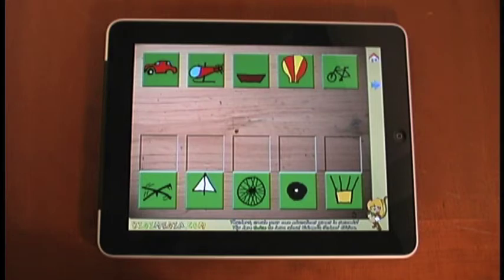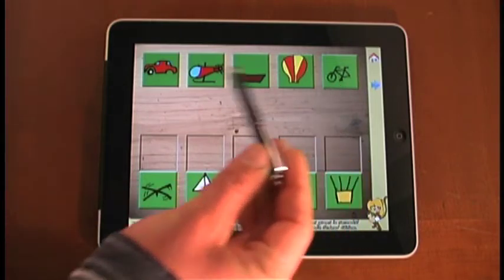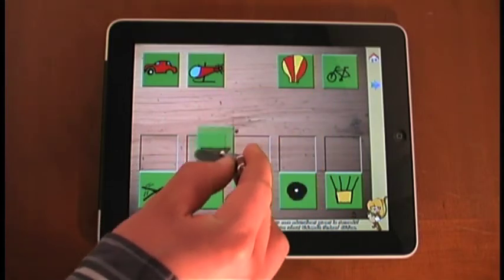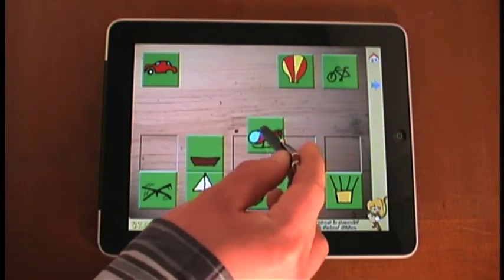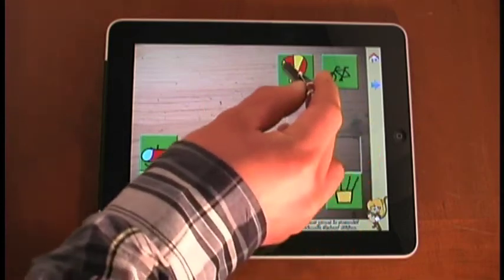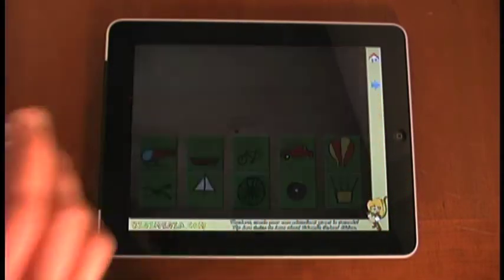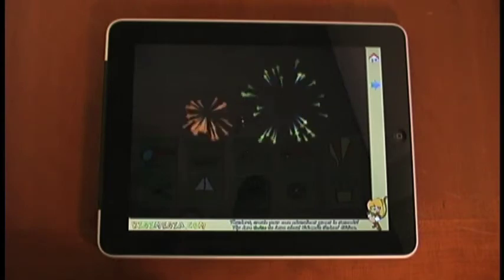Which pictures belong together? Now this one's a little bit more thought-provoking. It looks like we have vehicles that need something. A boat that needs a sail. A helicopter that needs a propeller. A car that needs a tire. A balloon that needs a little basket. And a bike that needs another bicycle. And the fireworks are my favorite.